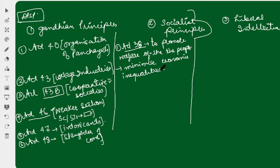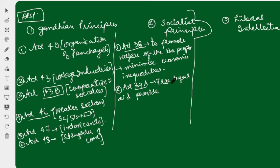Article 39A says to promote equal justice and, most importantly, provide free legal aid to the poor — if someone has a case but doesn't have the money, the state has to provide free legal aid.